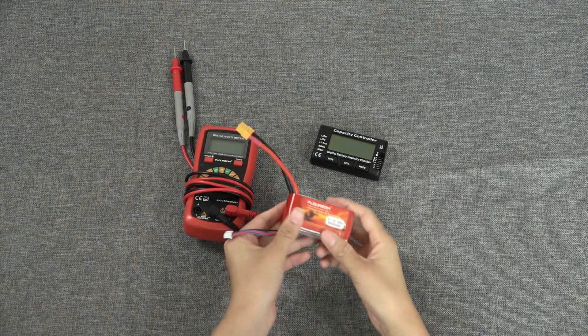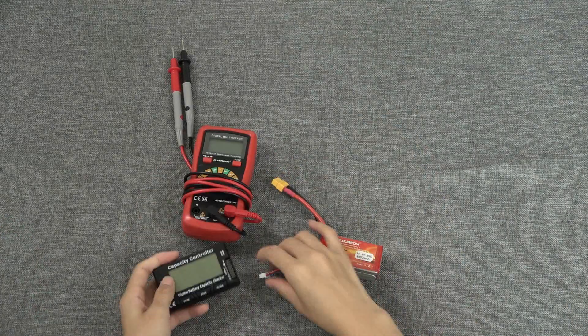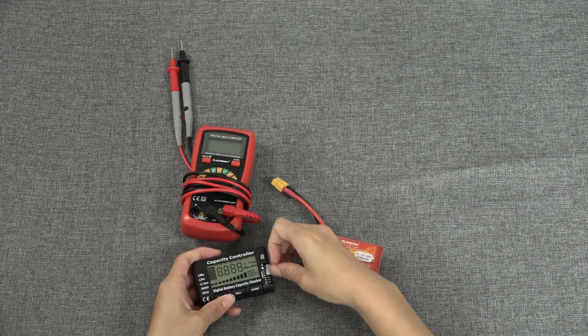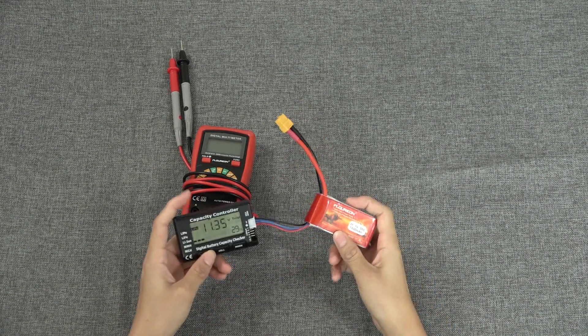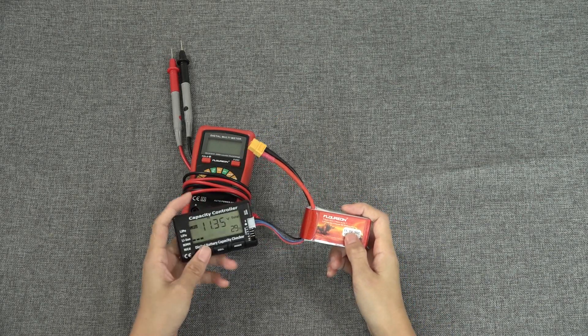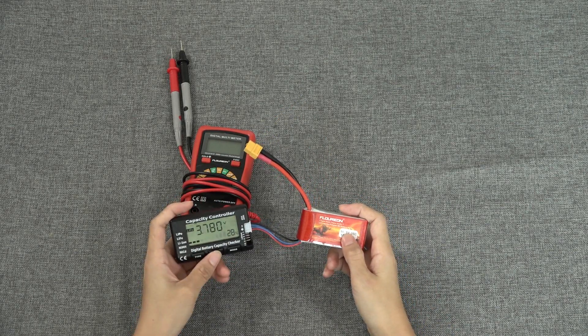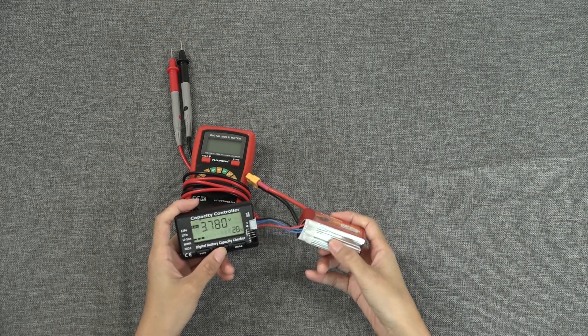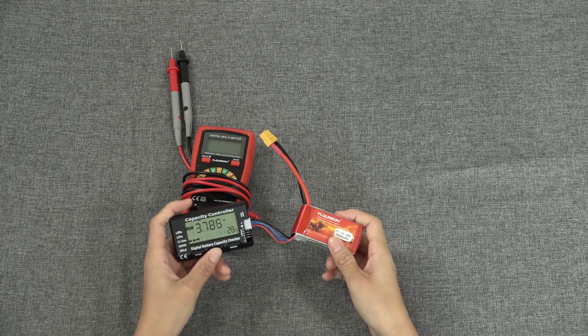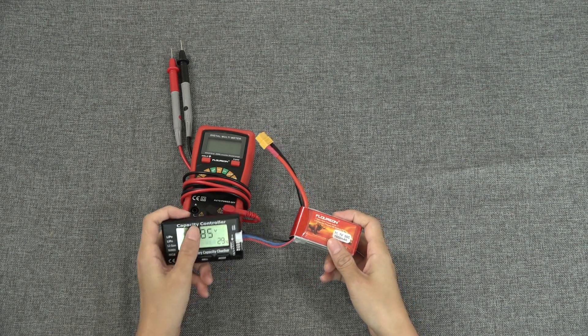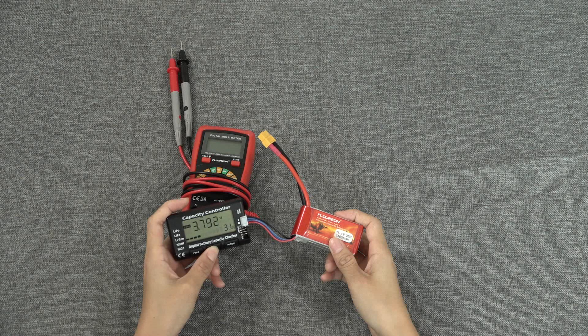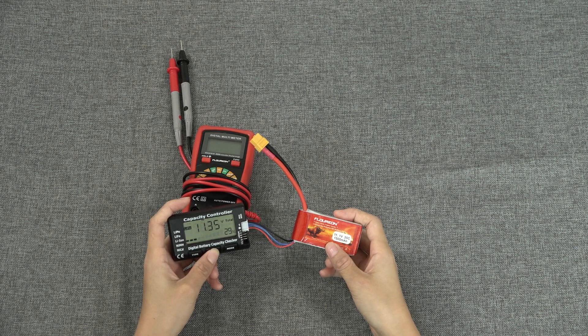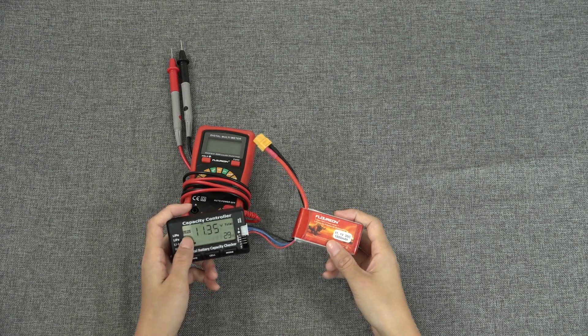So let's move on to the self-balance testing. Here you can see the capacity controller. Let's plug it in like this. Here you can see the total cell voltage is 11.35 volts. So let's check it cell by cell. The first cell is 3.78, cell 2 is 3.785, and cell 3 is 3.792. Well, obviously the voltage is not balanced enough.